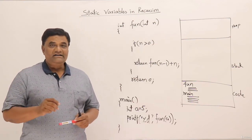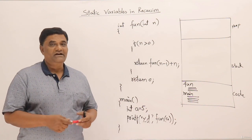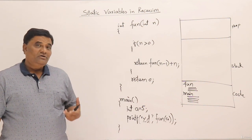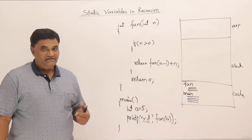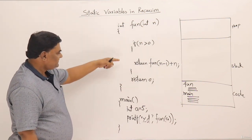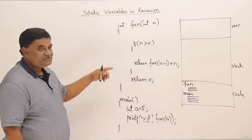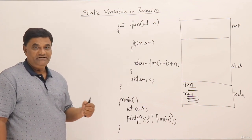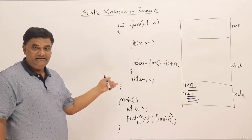Let us look at static variables in recursion. We have seen how to trace recursion and how a recursive function utilizes a stack. So what if there are any static variables? How do we treat them inside a recursive function? Here I have an example recursive function without static variables. I will trace it first, and then after introducing static, I will show you the difference.